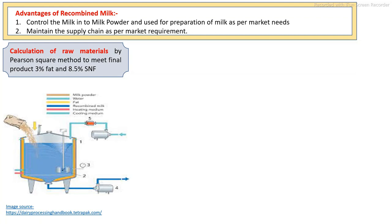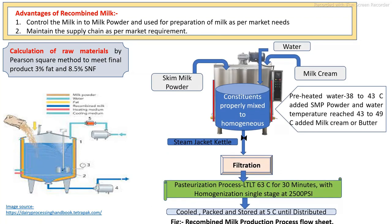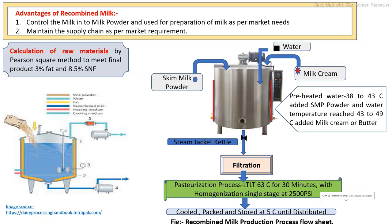The standardization process of recombined and reconstituted milk is calculated by the Pearson square method in order to meet the final requirement of three percent fat and 8.5 percent SNF. As per the initial raw material containing fat and SNF, the calculation is carried out and the raw materials are mixed accordingly to prepare the recombined and reconstituted milk.